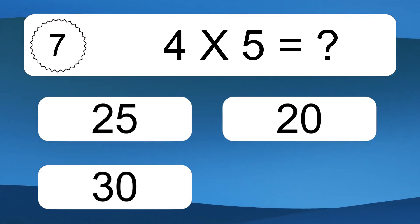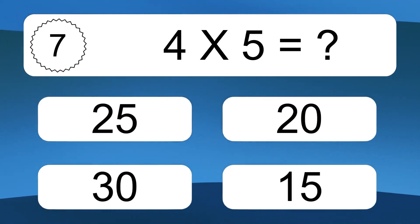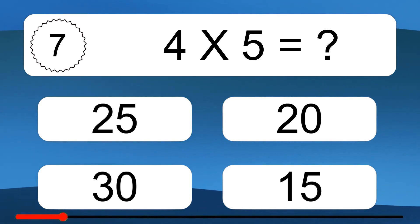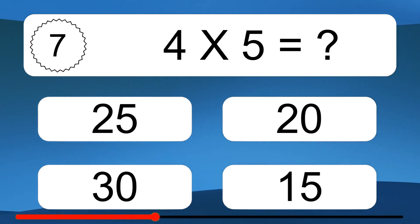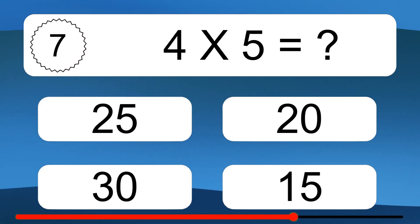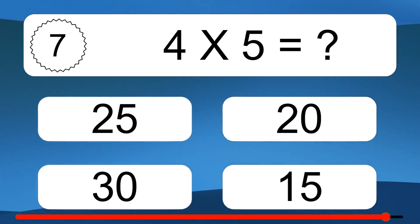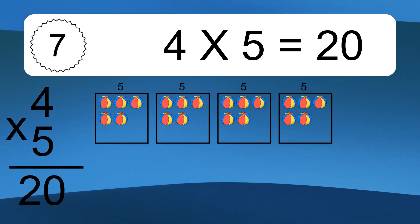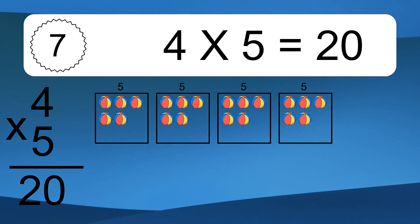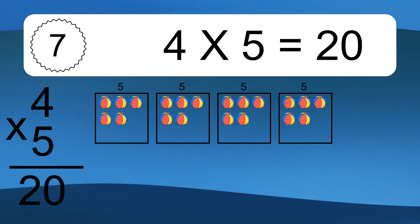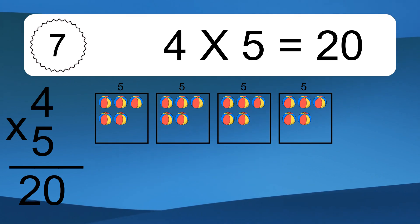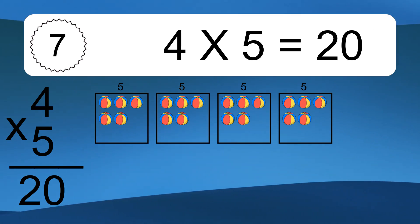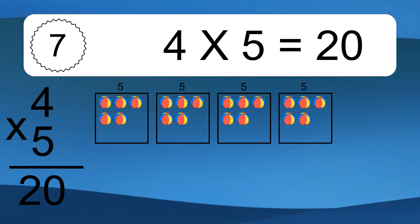4 times 5 equals what? We have 4 boxes, and each box has 5 colorful balls inside. If you count all the balls in all the boxes together, you will have 4 times 5 balls. This equals 20 balls.